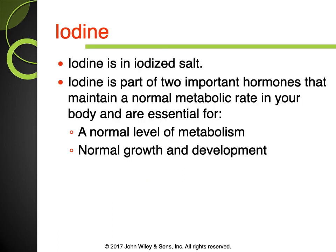Iodine is typically found in iodized salt and also in shellfish like mussels, oysters, and clams. A severe iodine deficiency would cause a goiter, but we don't really see that in America because most people use iodized salt. Many kitchens switch to kosher salt since Americans aren't generally deficient in iodine. Iodine is part of two important hormones that maintain a normal metabolic rate and are essential for normal growth and development.